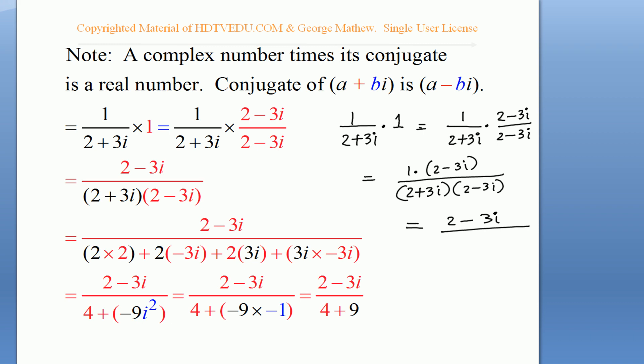First times first is 2 times 2, which is 4. Outer times outer is 2 times negative 3i, which is negative 6i. Inner times inner is positive 3i times 2, which is 6i. Immediately you see negative 6i and plus 6i cancels out. And what is 3i times negative 3i? Negative 9i squared.